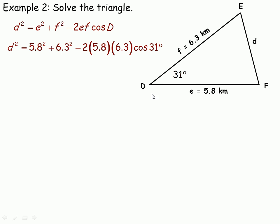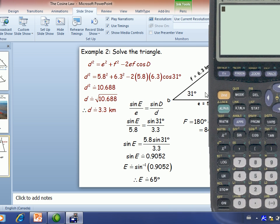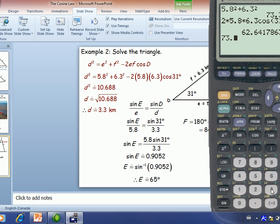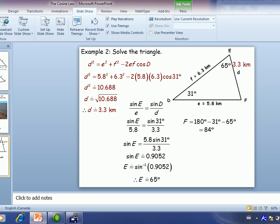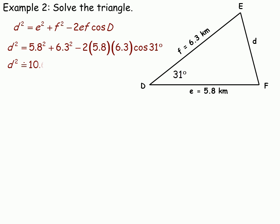When we evaluate the calculation: 5.8 squared plus 6.3 squared gives 73.33, then we compute 2 times 5.8 times 6.3 times cosine of 31, which gives 62.64. Subtracting: 73.33 minus 62.64 gives 10.688. Taking the square root, side D is about 3.3 kilometers.